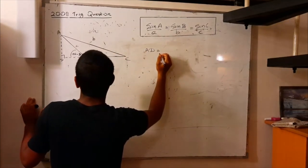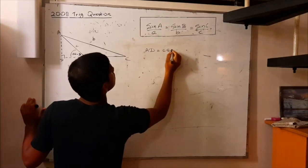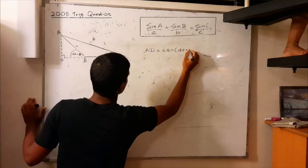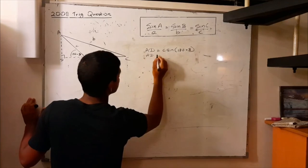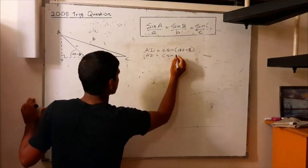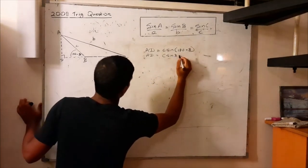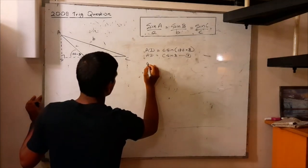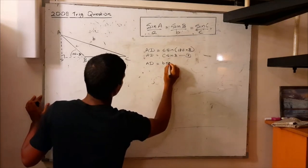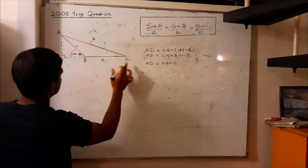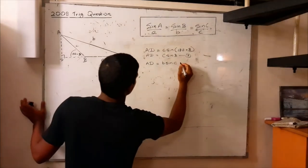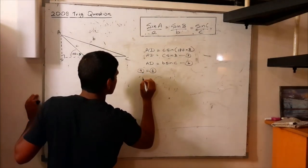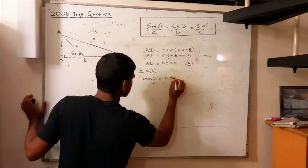We can say AD equals c sine(180° minus B). Therefore AD equals c sin B, since sine(180° minus B) equals sin B. We write that as equation 5. We can also write AD equals b sin C, by considering AC as the hypotenuse — equation 6. Therefore by equating 5 and 6, we can say b sin C equals c sin B.